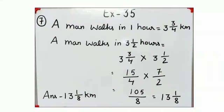3 and 3 by 4 multiply 3 and 1 by 2. Convert them to improper fraction. 4 times 3 is 12, 12 plus 3 is 15. 15 upon 4. 2 times 3 is 6, 6 plus 1 is 7 upon 2. We cannot cancel these fractions, so we will multiply the numerators.